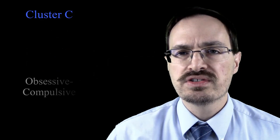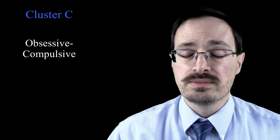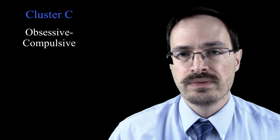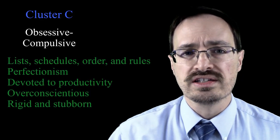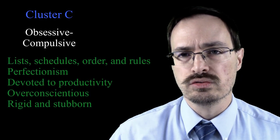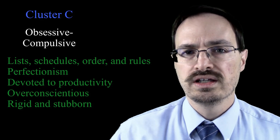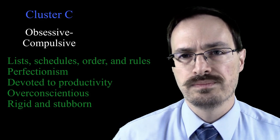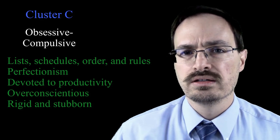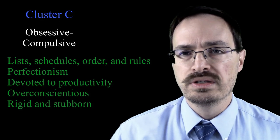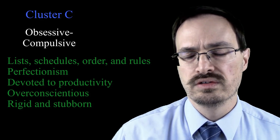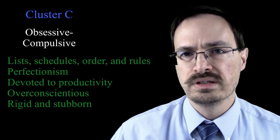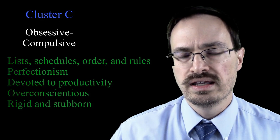Obsessive compulsive personality disorder, the last in cluster C, features a preoccupation with lists, schedules, order, rules, and organization. Characteristics include perfectionism, being over-devoted to work and productivity, being over-conscientious, and being rigid and stubborn.